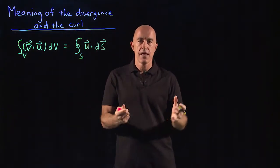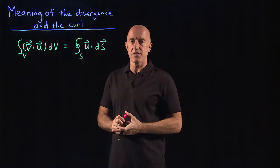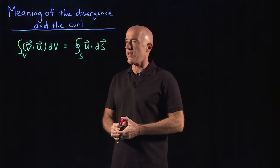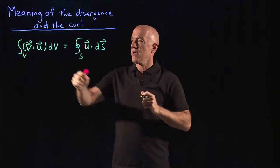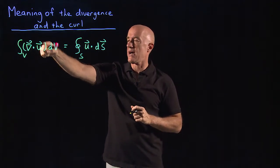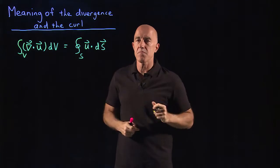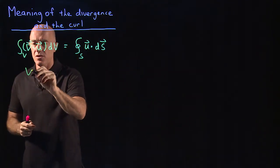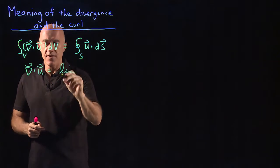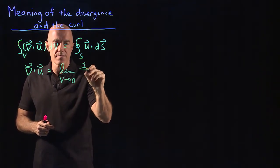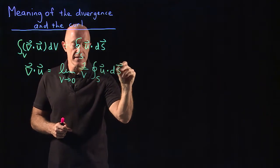You have some volume surrounded by a surface. How do we get the definition of the divergence of u from the divergence theorem? We can take our volume and shrink it down to a point. Then the integral will just become del·u times the volume of that small region. Since we're limiting to a point, that gives us del·u equals the limit as the volume goes to zero of 1 divided by the volume times the surface integral of u·dS.